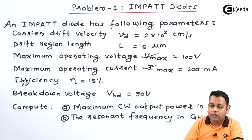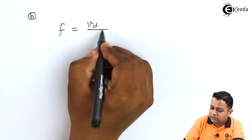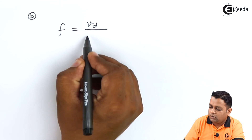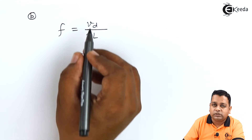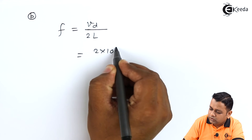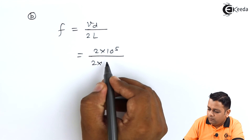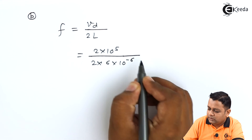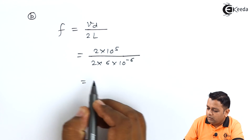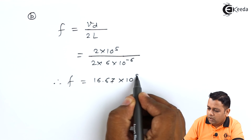For Part (b), the resonant frequency f of the IMPATT diode is expressed as f = v_d / (2L). Substituting the values: numerator is 2 × 10^5 m/s (drift velocity), denominator is 2 × 6 × 10^−6 meters (twice the drift length). This gives f = 16.67 × 10^9.